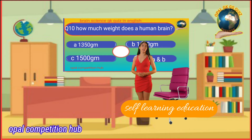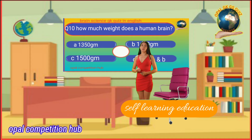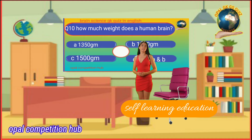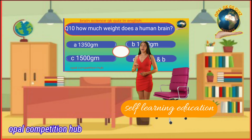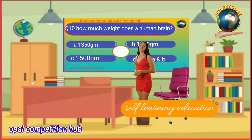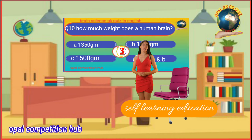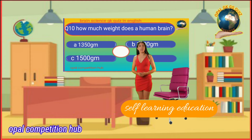Question number 10: How much does a human brain weigh? Option A: 1,350 grams. Option B: 1,400 grams. Option C: 1,500 grams. Option D: Both A and B. Your time starts now. Your answer will be Option D: Both A and B.